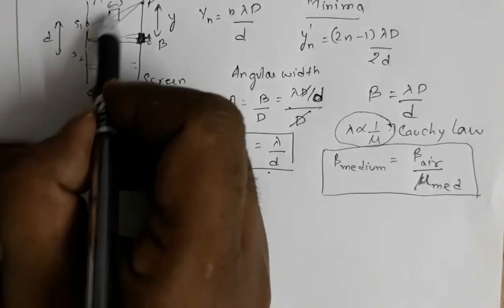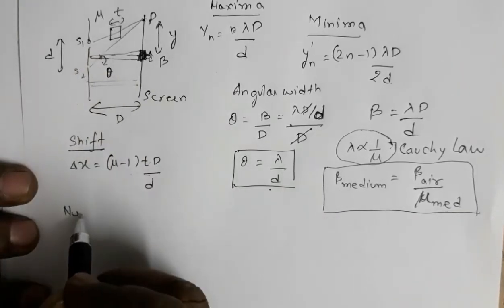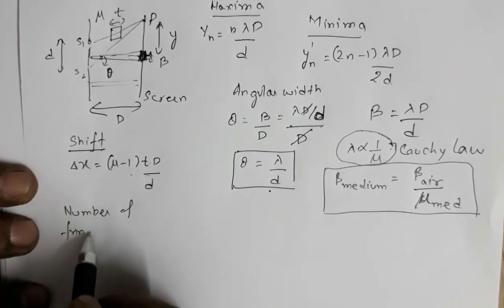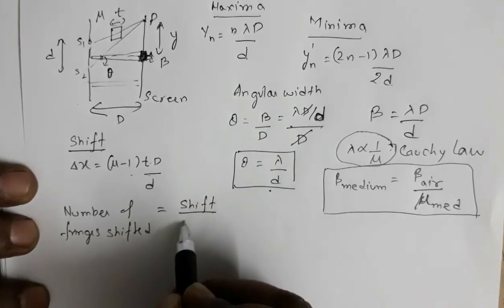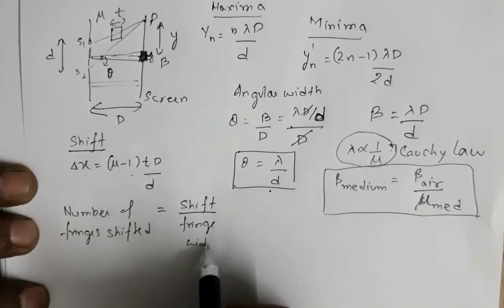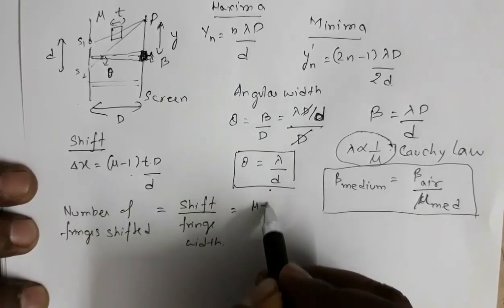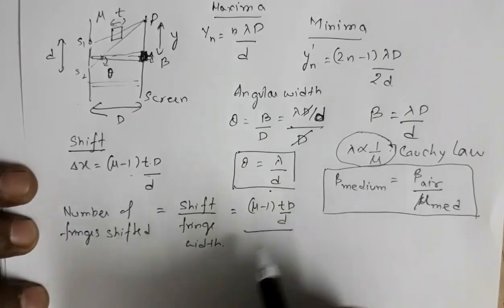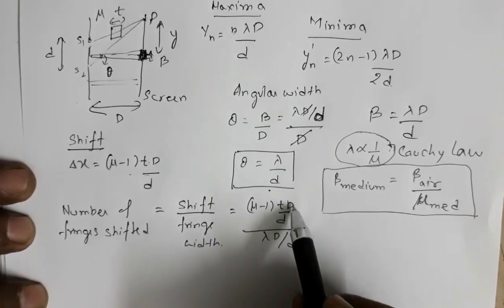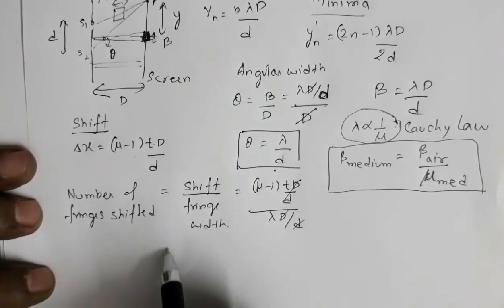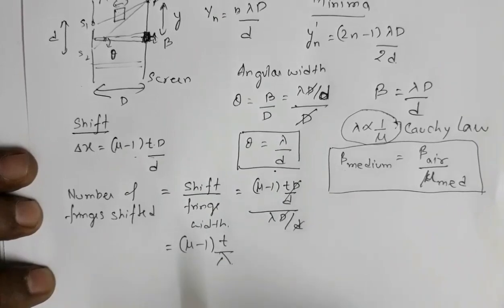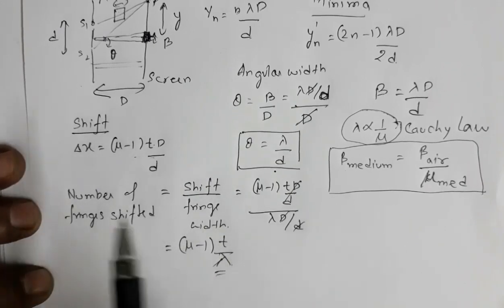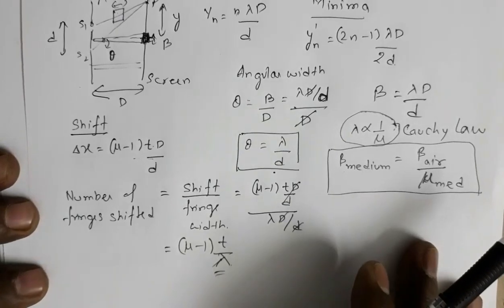One more important result: the number of fringes shifted due to the introduction of the refracting medium equals shift divided by fringe width. Shift is (μ−1)·t·D/d and fringe width is λD/d, so D/d cancels and the number of fringes shifted = (μ−1)·t / λ. Therefore, the number of fringes shifted does depend on wavelength λ, even though the shift itself is independent of wavelength.